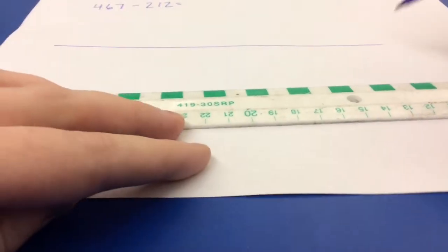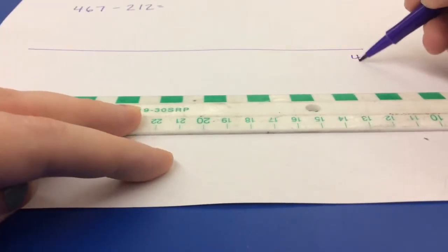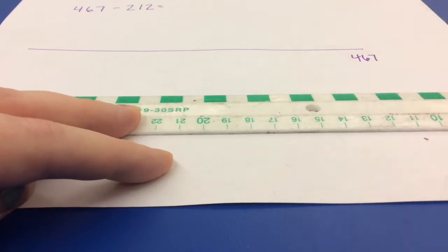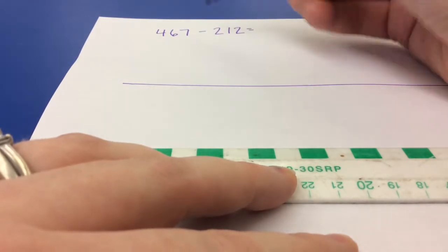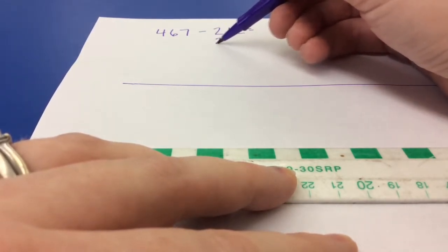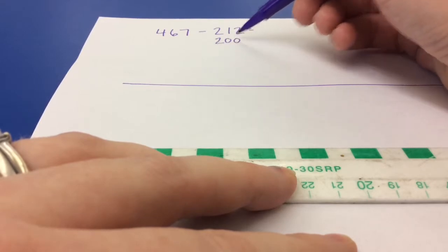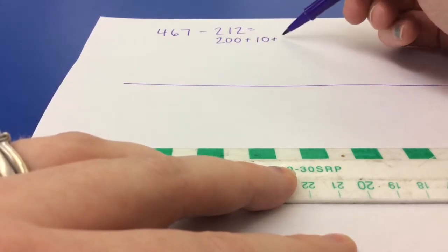At the end of your page, because it's subtraction, we need to write the big number, which is 467. Then we need to go back and look at our question and the smaller number and break it apart into its expanded form, which is 200 plus 10 plus 2.